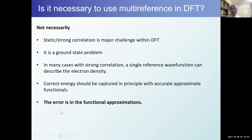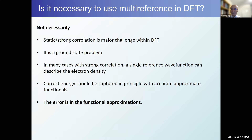Is it necessary to use multi-references for strong correlation with DFT? My view is that it's not necessary. Strong correlation is indeed a major challenge with DFT, but it is a ground state problem, and in many cases a single reference wave function is sufficient to describe the total electron density. For example, in dissociation of multiple bonds, the molecule remains a singlet — one determinant can completely capture the electron density. The problem is the energy expressed in the functional.